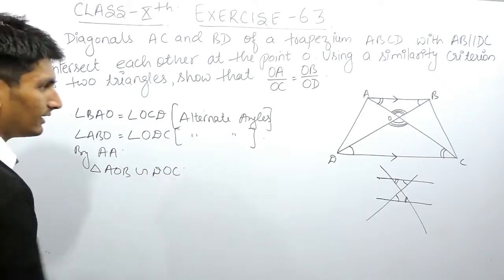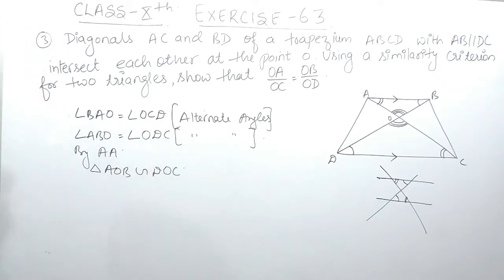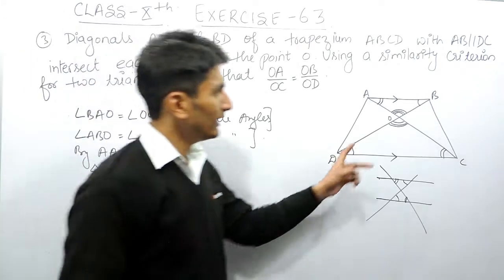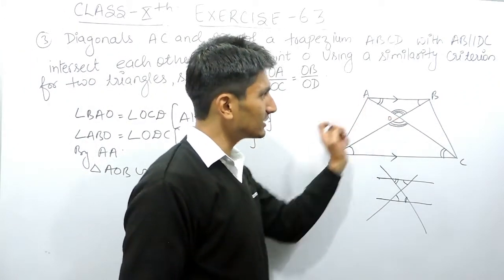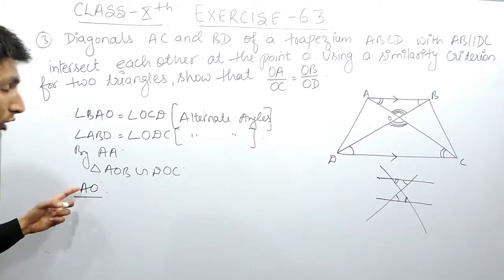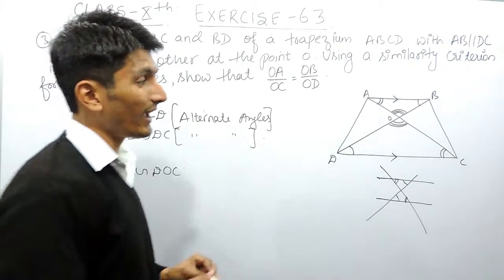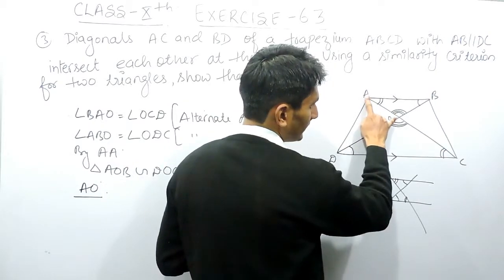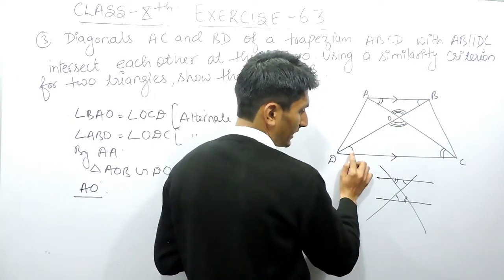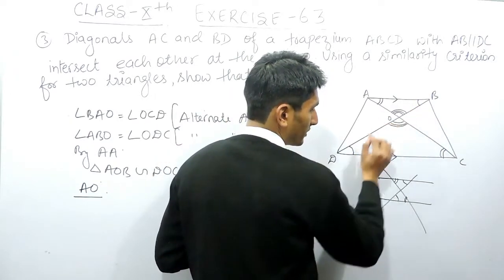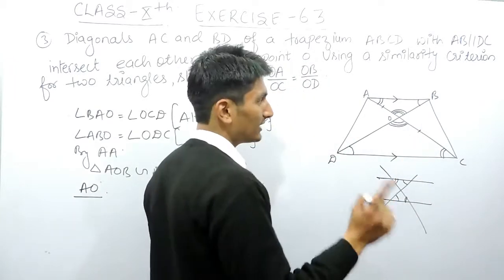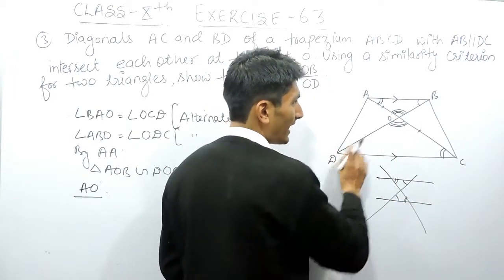Now these two triangles are similar, so their corresponding sides are in equal ratios. To find the corresponding sides, consider side AO in the small triangle — this side is opposite to a particular angle. In the other triangle, the equal angle is opposite side OC. So the side corresponding to AO must be OC.